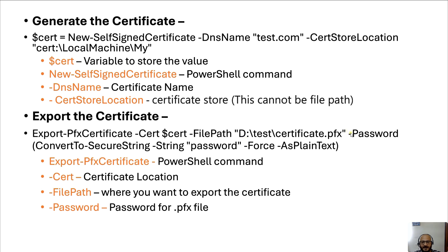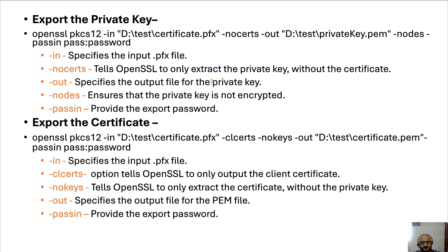The -FilePath parameter is the location where I am storing my certificate. The -Password parameter is the password I want to set for this certificate. I'm using ConvertTo-SecureString with -String for the plain text password and -AsPlainText -Force to convert it to a secure string. So this is the password we are going to set for this certificate.